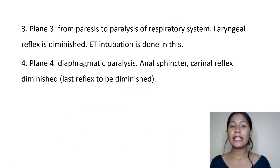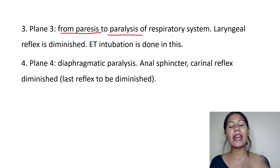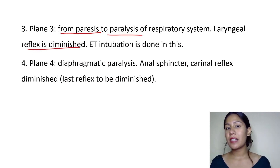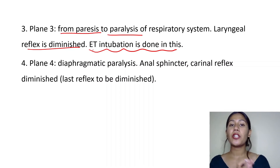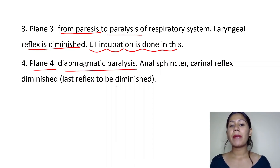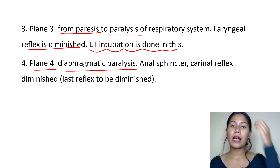Plane 3 goes from paresis to paralysis of the respiratory system — respiration begins to stop. The laryngeal reflex is diminished. This is the plane in which we perform ET intubation — we insert the endotracheal tube into the patient at stage 3, Plane 3.